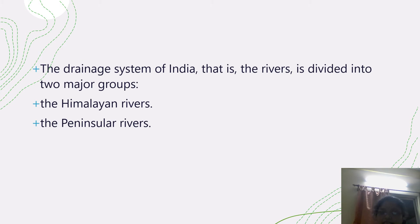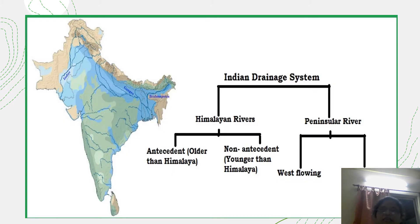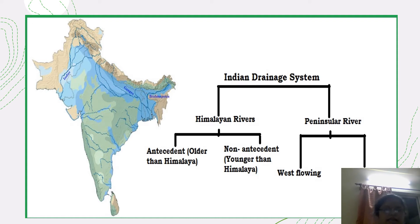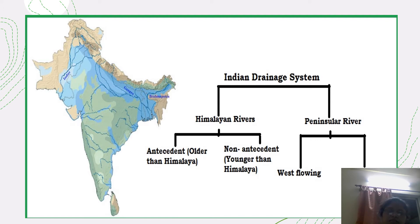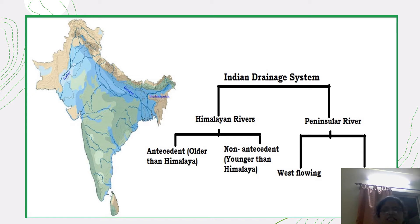You can see the Indian drainage system flowing — the Himalayan river and peninsular river. These are further divided into older Himalayan rivers and younger Himalayan rivers, and peninsular rivers into west-flowing and east-flowing. You can see these pictures here, which are very helpful to understand this important topic.